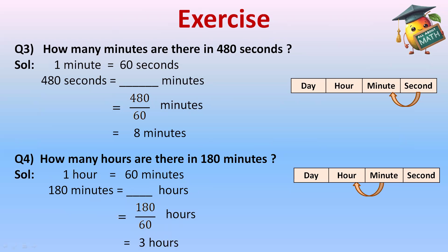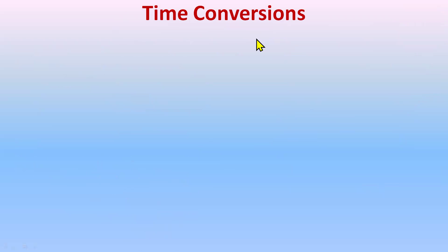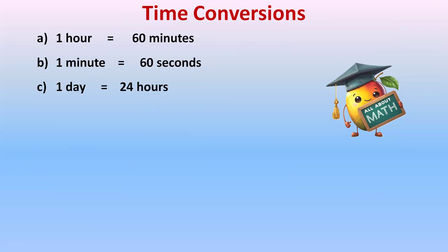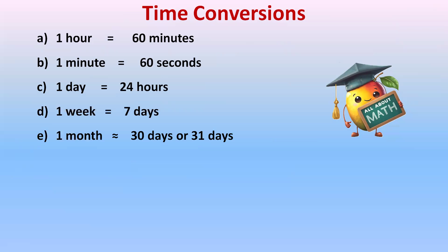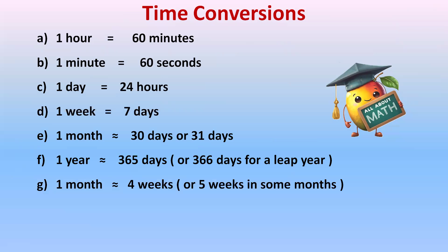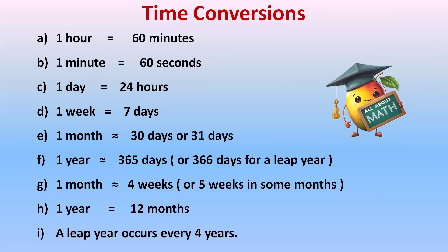It's very easy — just check which direction you are converting: moving forward, multiply; moving backward, divide. Key conversions to remember: 1 hour = 60 minutes; 1 minute = 60 seconds; 1 day = 24 hours; 1 week = 7 days; 1 month = 30 or 31 days; 1 year = 365 days (or 366 for a leap year); 1 year = 12 months. A leap year occurs every four years.